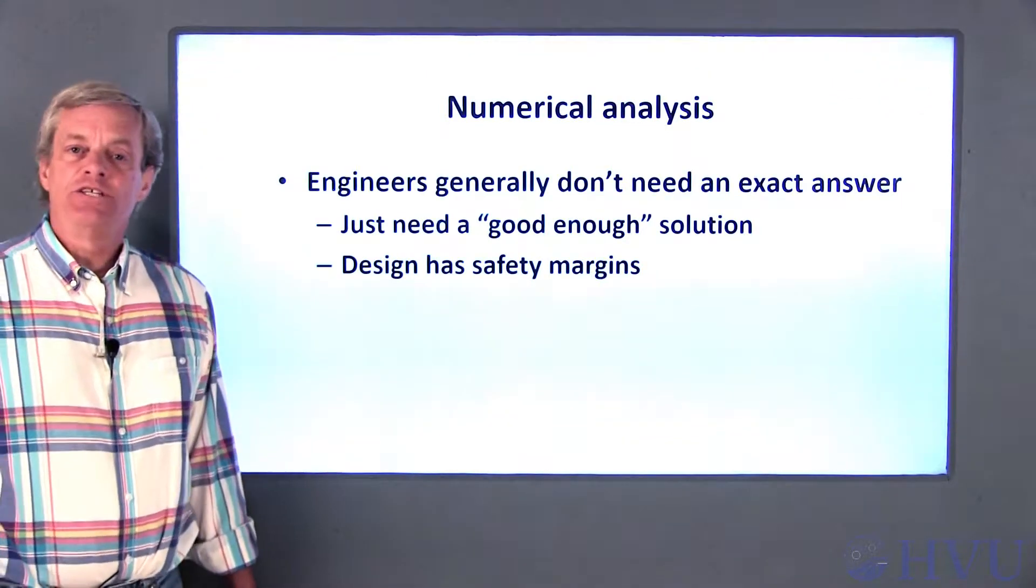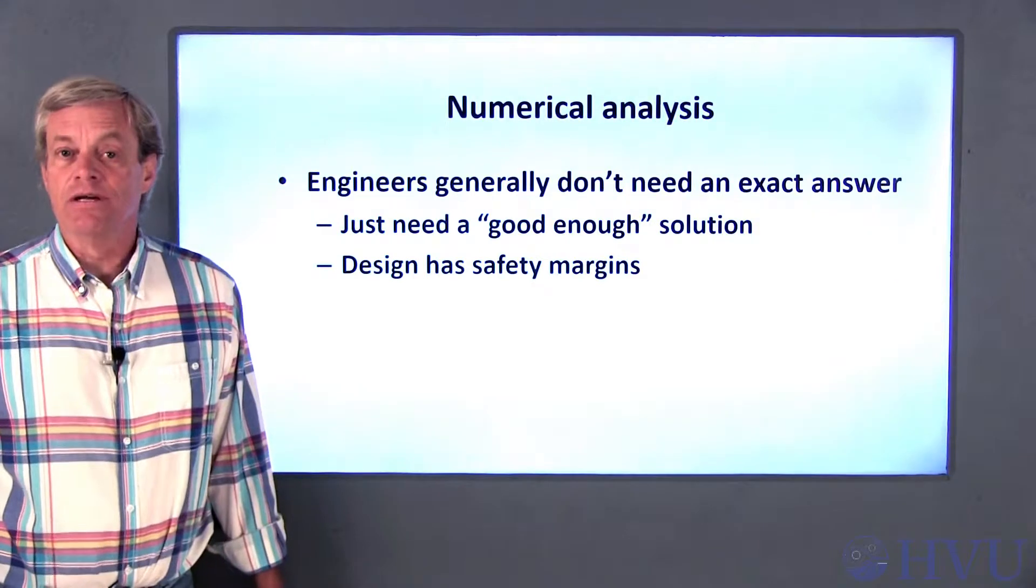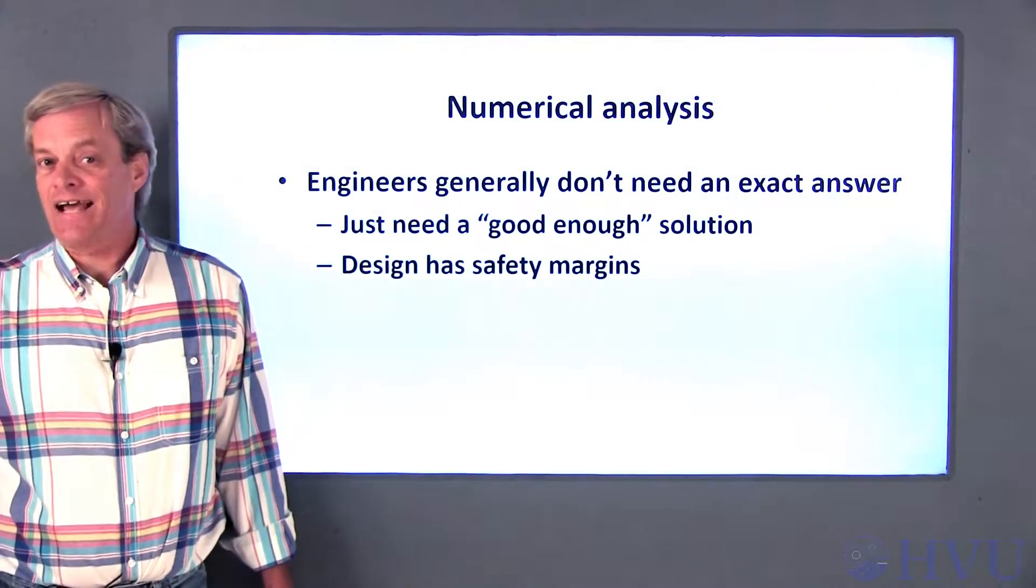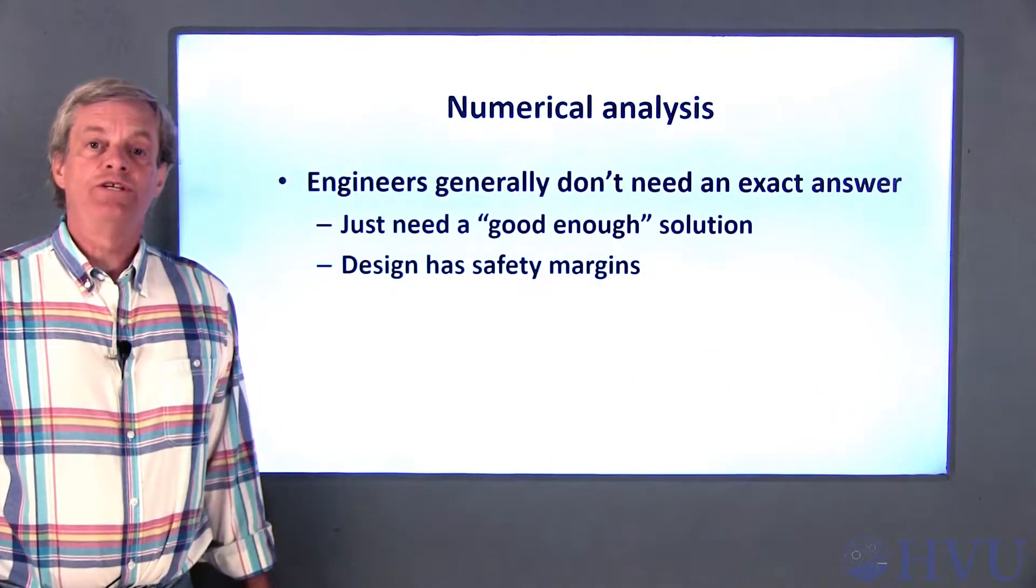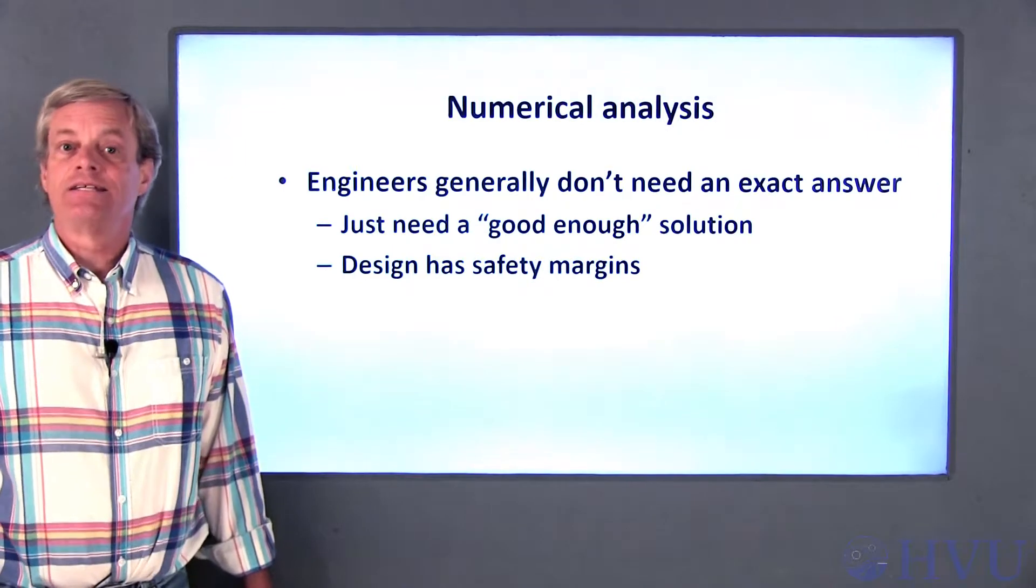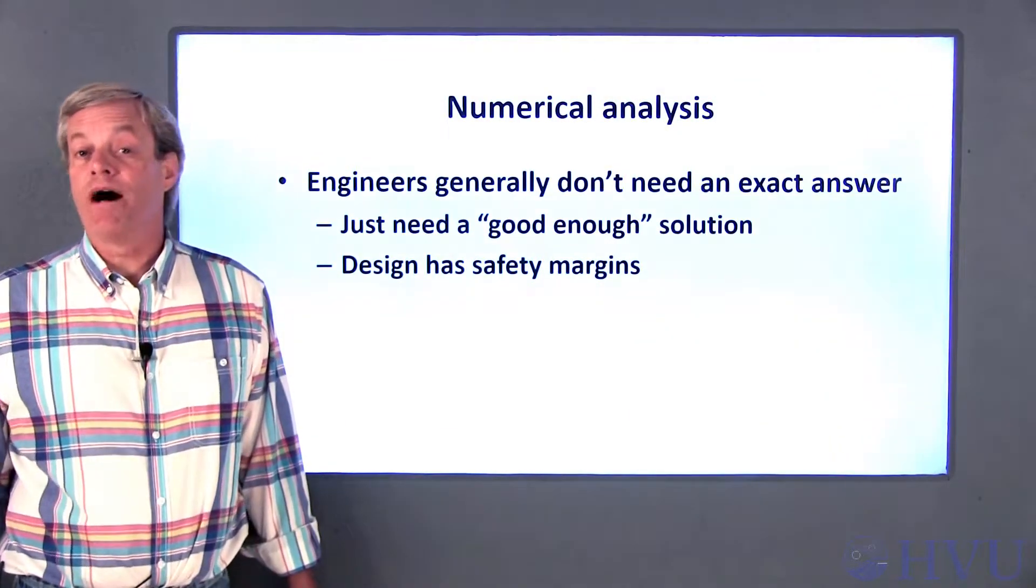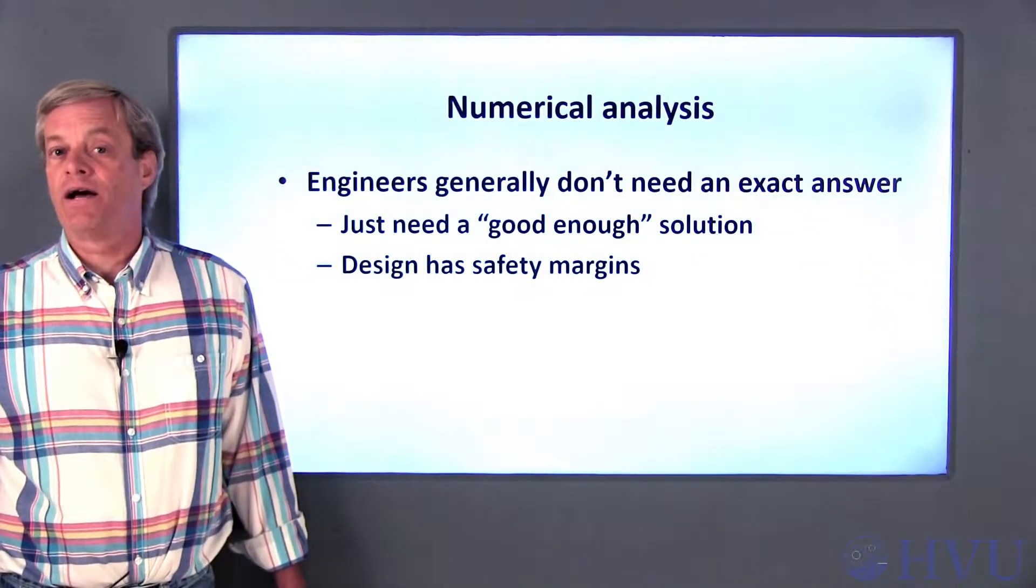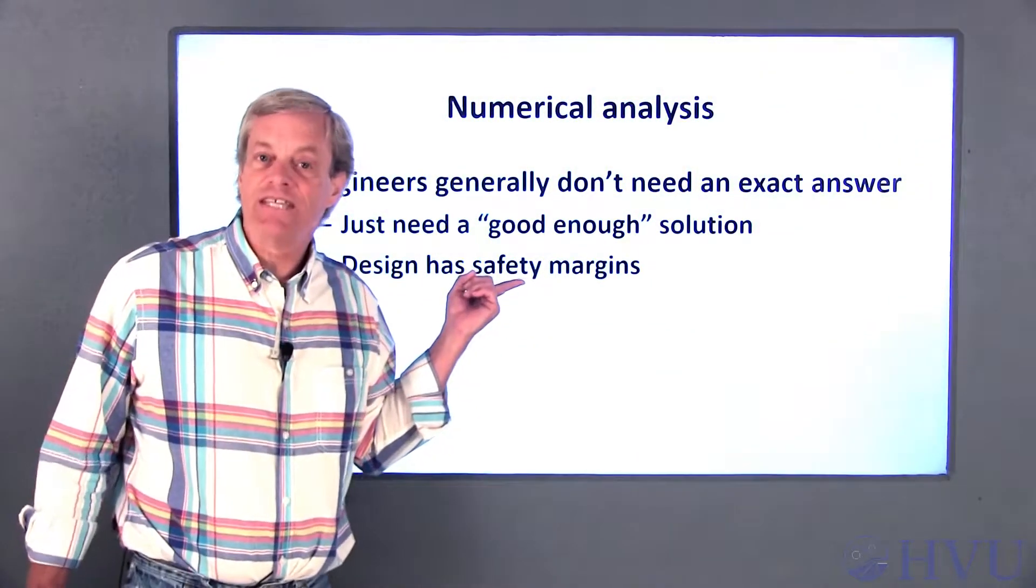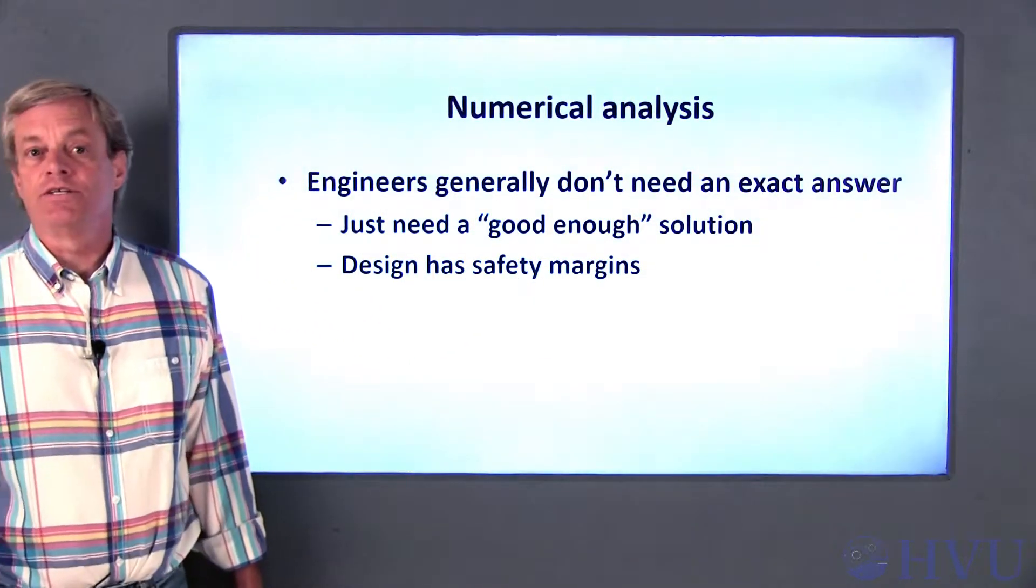This may seem weird, but engineers tend to have a different attitude towards math than most mathematicians. In general, engineers don't necessarily need or expect to get an exact solution to a given problem. We just need something that's close enough to being correct to be useful. Since the solution to the math is going to be used to design something, we can always modify our design to account for possible errors in the math. The design always has a margin of safety to account for the possibility of math errors or unexpected operating conditions.